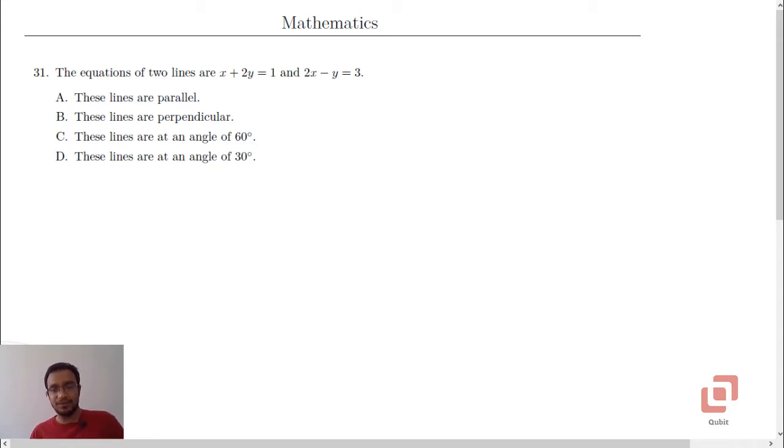This question is very simple. This is based on 11th standard coordinate geometry, question number 31. The equations of two lines are x plus 2y equal to 1 and 2x minus y equal to 3. These lines are parallel, these lines are perpendicular, these lines are at an angle of 60 degrees, and these lines are at an angle of 30 degrees.